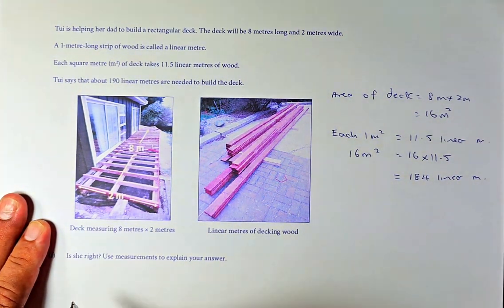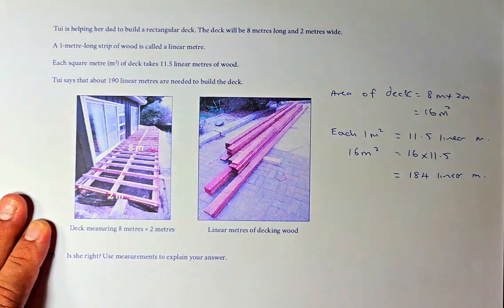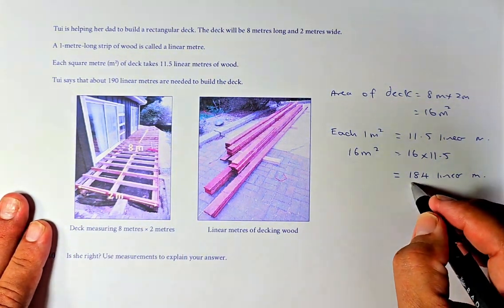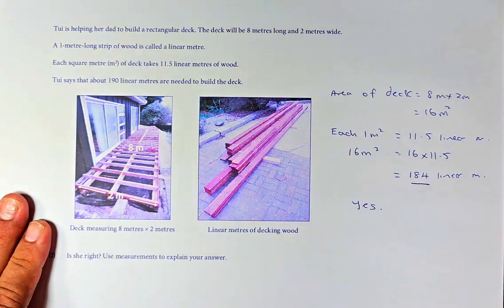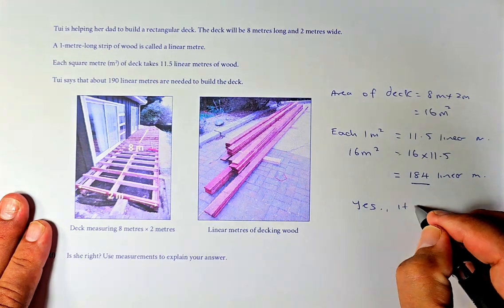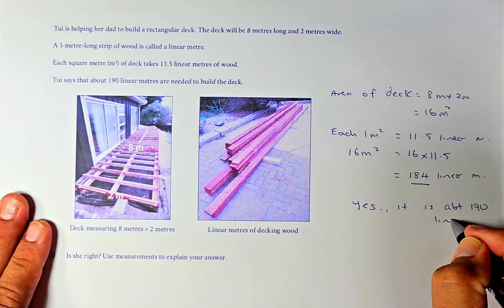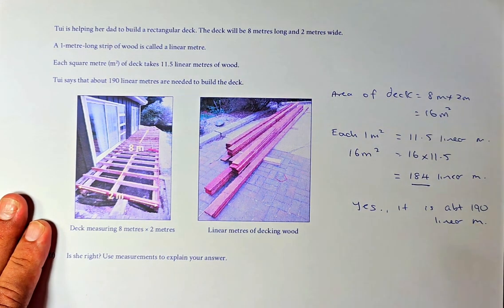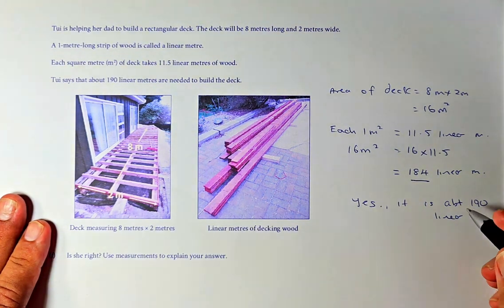So, the question is, is she right? She said that Tui says 190 linear meters are needed to build the deck. So, 184 is quite close to 190, you can answer yes. It is about 190 linear meters.